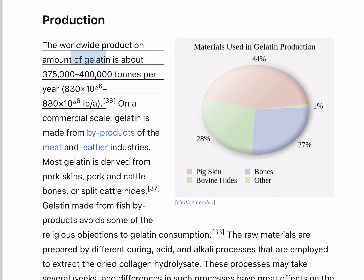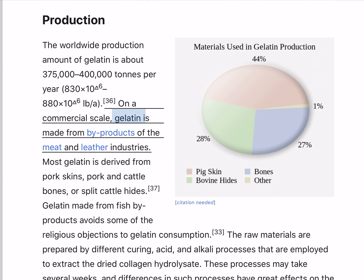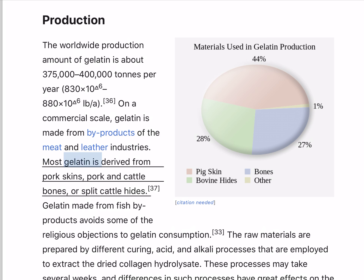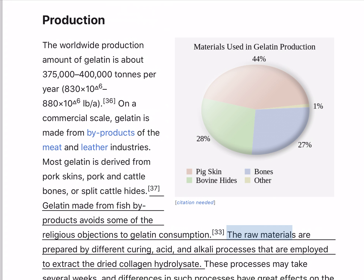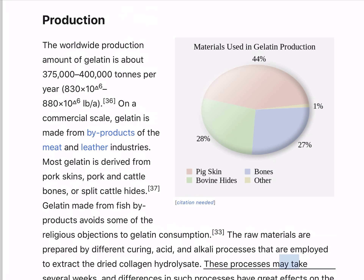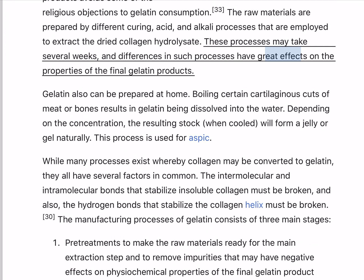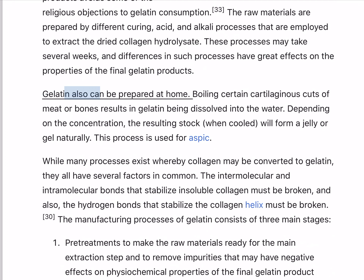The worldwide production amount of gelatin is about 375,400,000 tons per year. On a commercial scale, gelatin is made from byproducts of the meat and leather industries. Most gelatin is derived from pork skins, pork and cattle bones, or split cattle hides. Gelatin made from fish byproducts avoids some of the religious objections to gelatin consumption. The raw materials are prepared by different curing, acid, and alkali processes that are employed to extract the dried collagen hydrolysate. These processes may take several weeks, and differences in such processes have great effects on the properties of the final gelatin products.